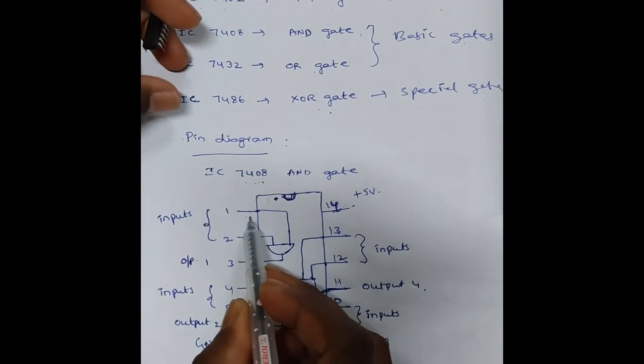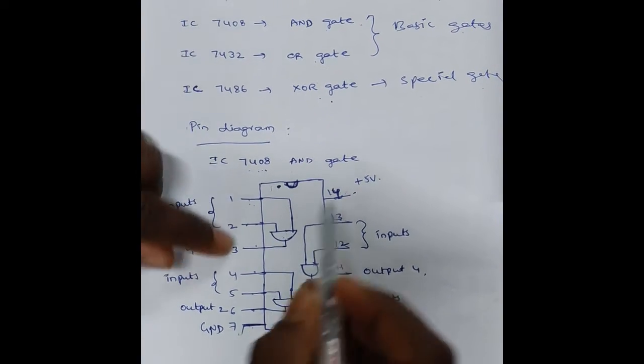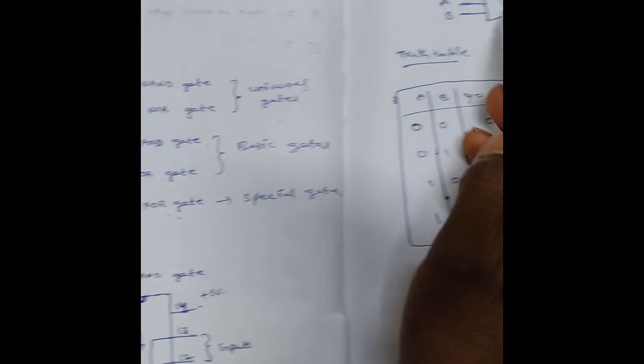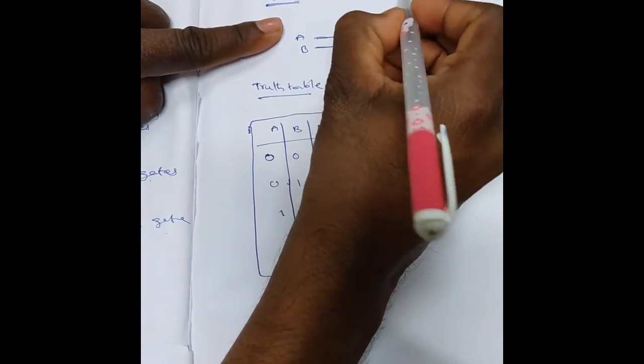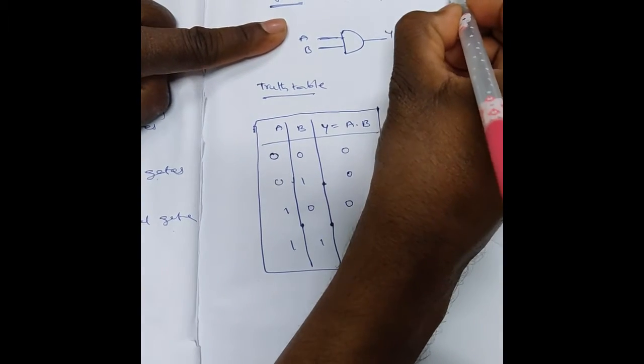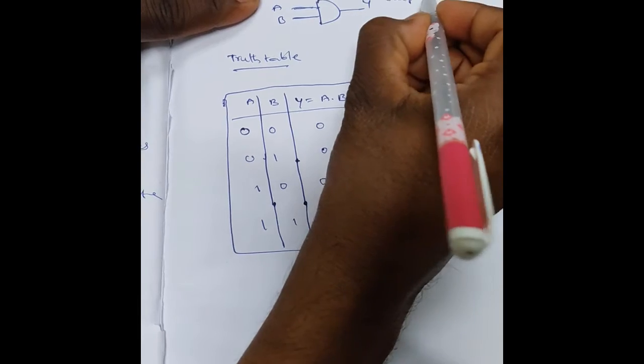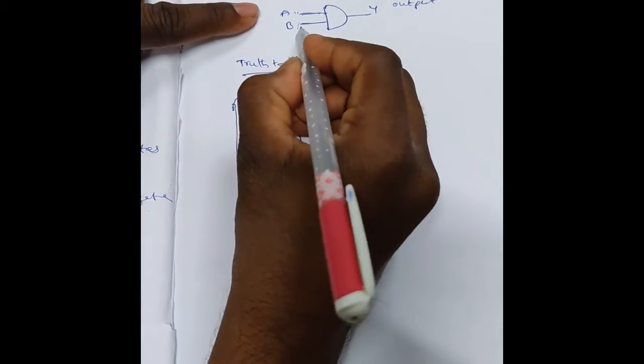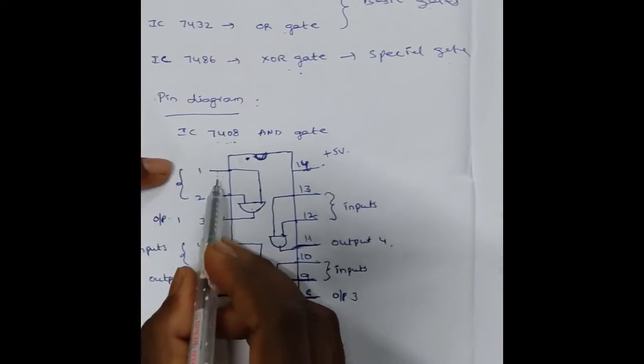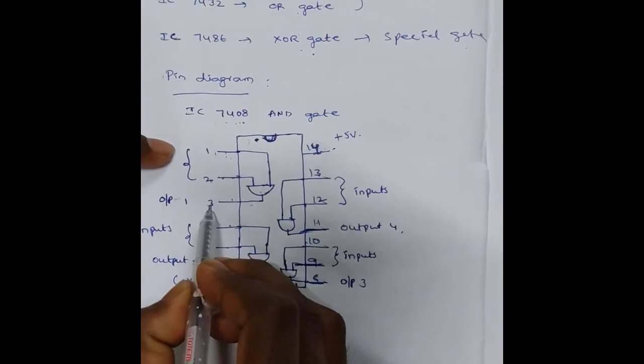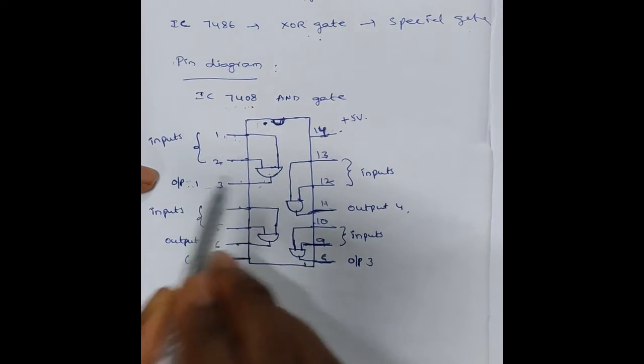First pin and second pin are the inputs for the AND gate. The symbol for AND gate is a 2-input AND gate. That means 2 inputs: A and B are the inputs and Y is the output. Here, pins 1 and 2 are the inputs and pin 3 is the output for AND gate 1.